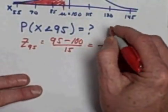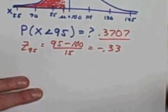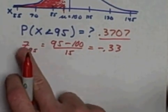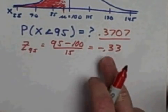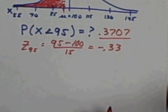So this probability is 0.3707. A two-step process. Convert the x-value to a z-score. Convert the z-score to a probability by using the table.